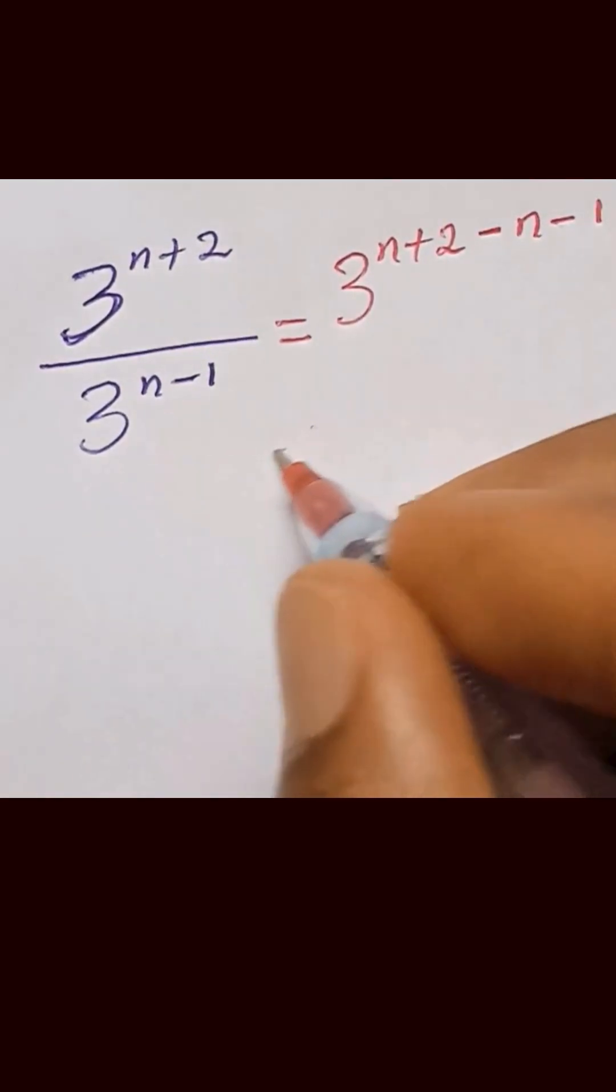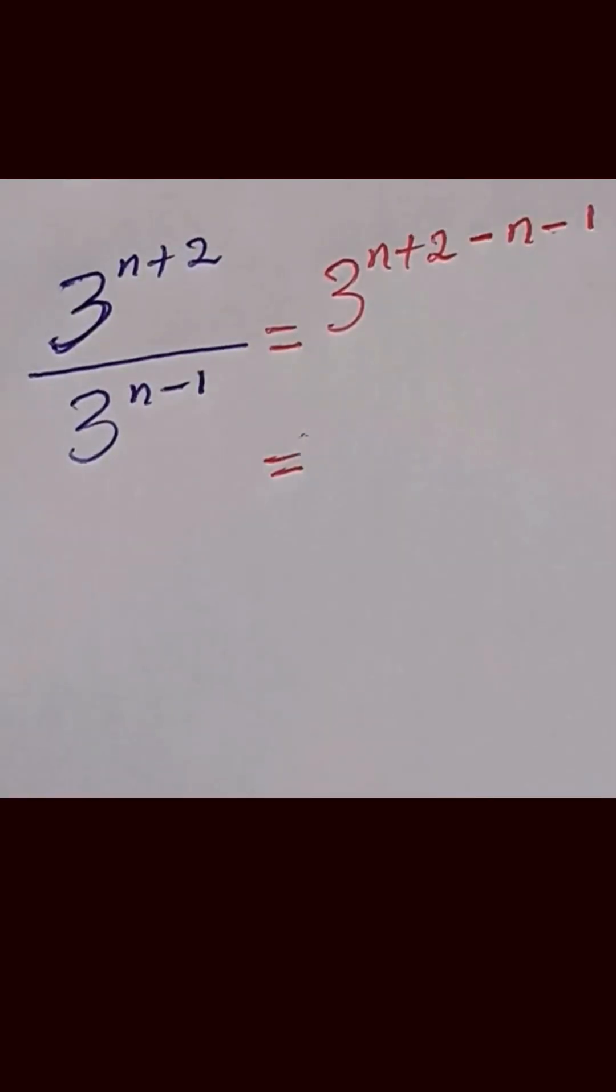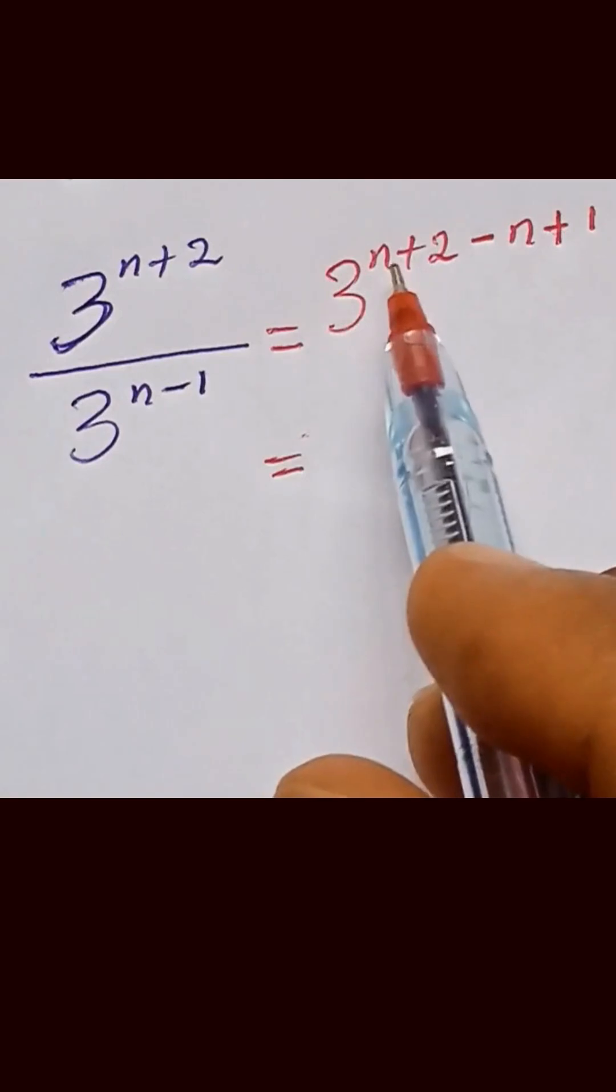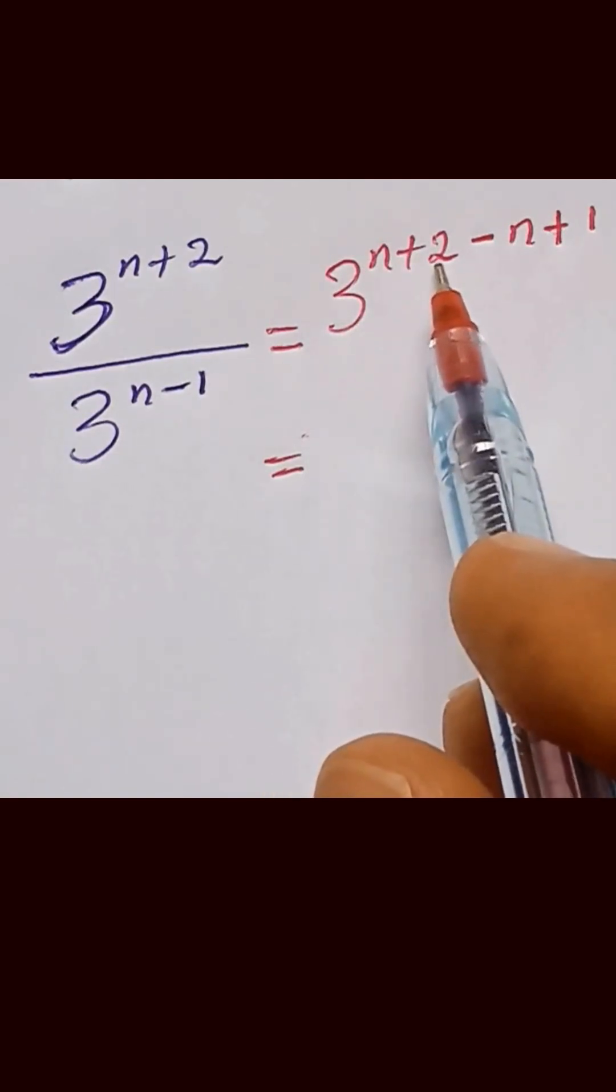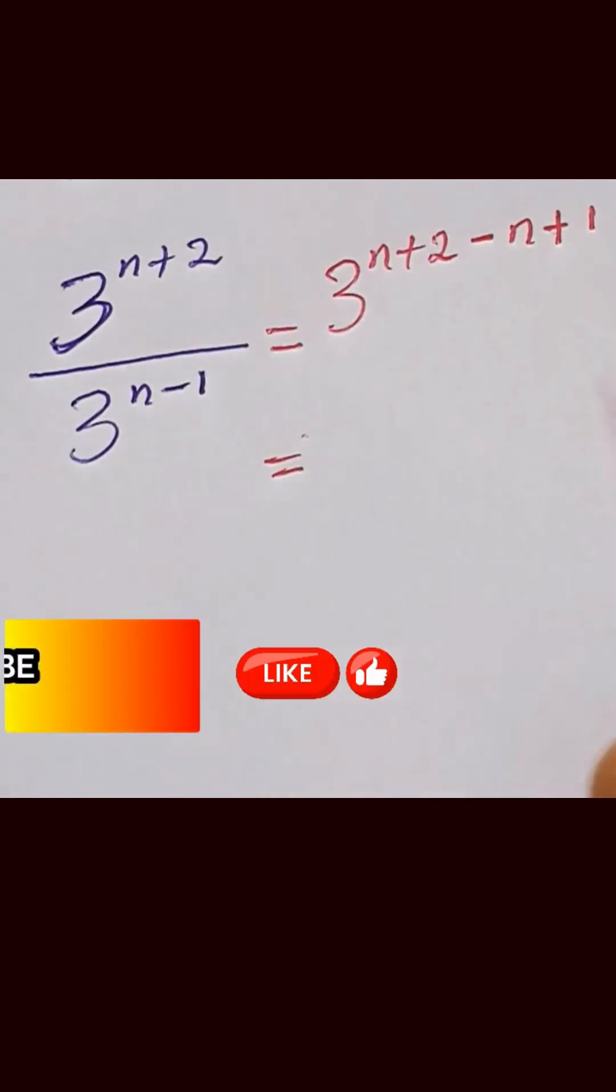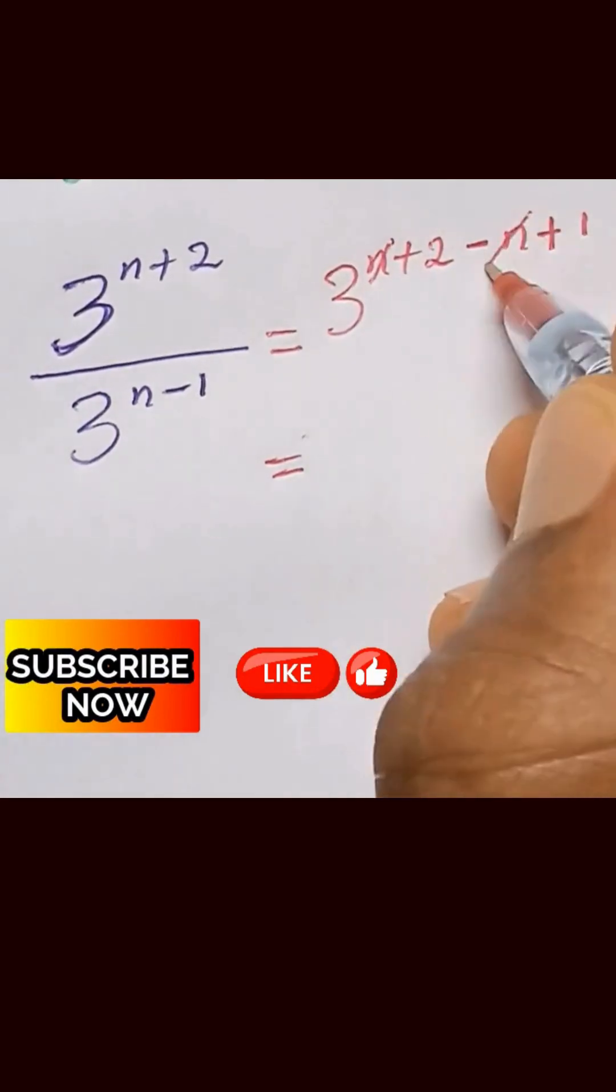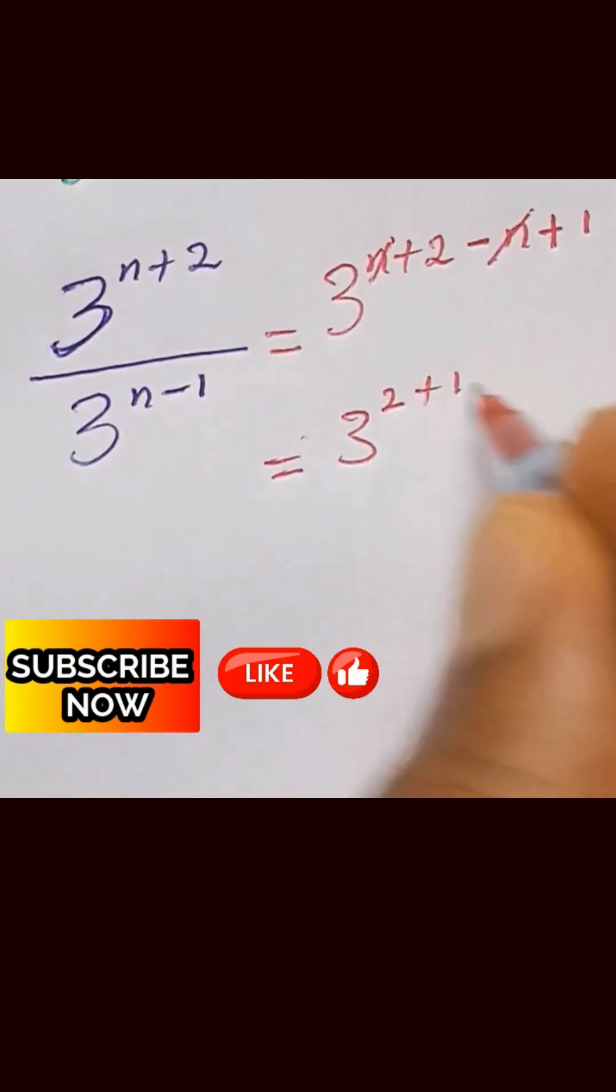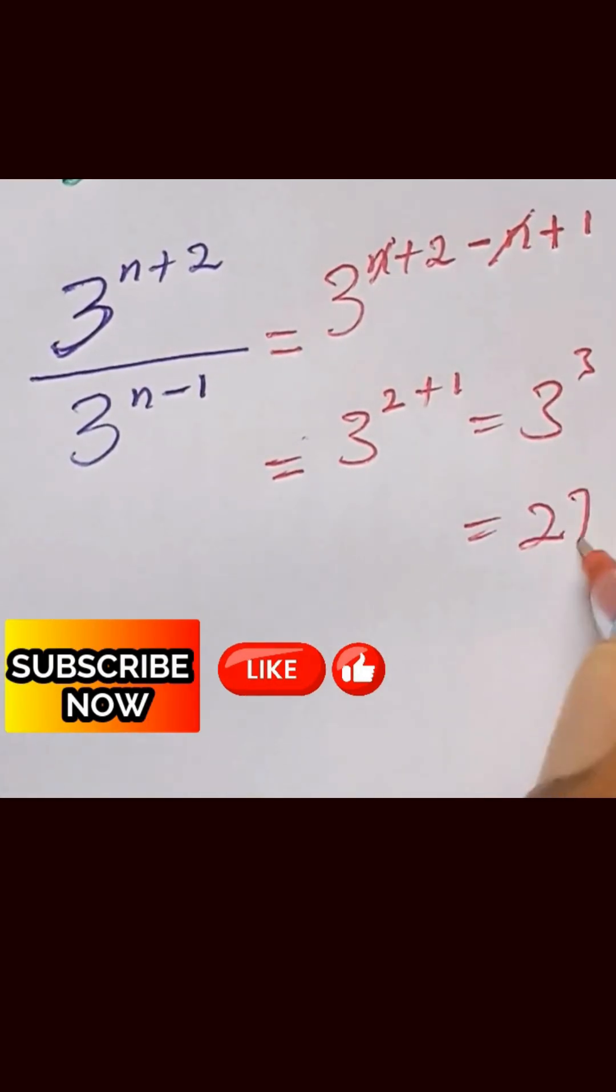From here, we can write this as 3 raised to the power of n plus 2 minus n plus 1. So this n goes with this n. We have 3 raised to the power of 2 plus 1. And that will be 3 raised to the power of 3. And that equals 27.